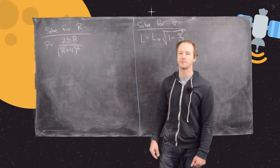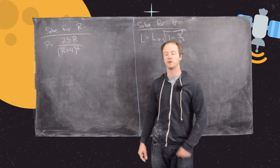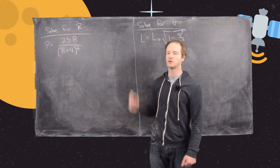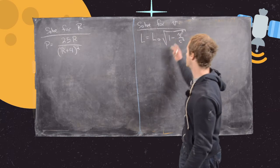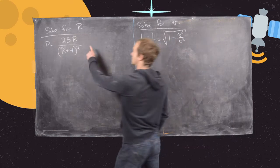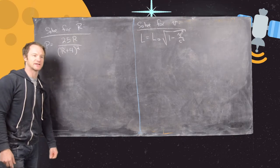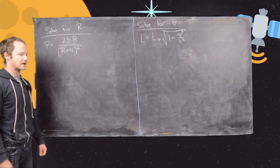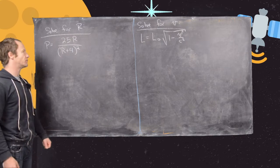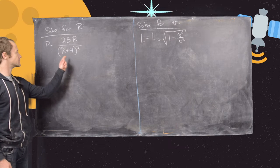In this video we're going to look at two examples of solving for a given variable in an equation which has more than one variable — one which is a rational equation and one which is a radical equation. We want to use the same strategy as if there's one variable, but just be really careful with our bookkeeping with the extra terms.